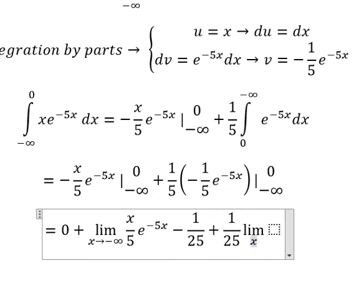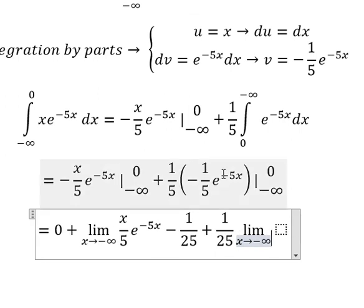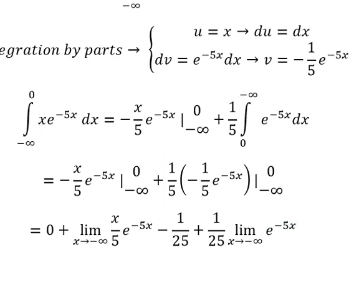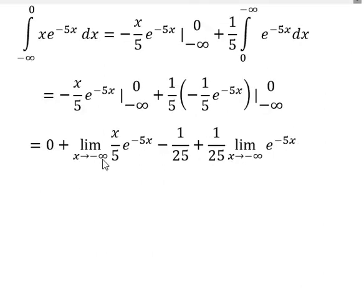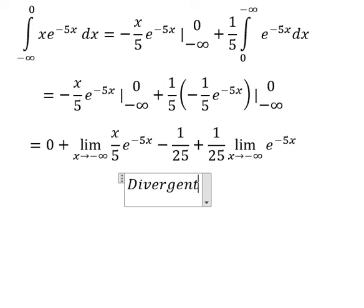When x approaches negative infinity, we have e to the power of negative 1 over 25. We know that when x goes to negative infinity, e to the power of negative 5 with the negative gives positive infinity. E with positive infinity will go to positive infinity. Similarly for this one, so we can say that this integral is divergent, with positive infinity.